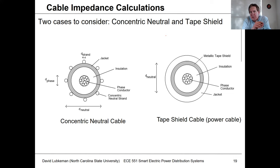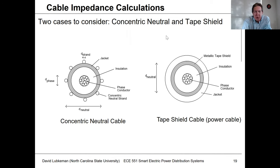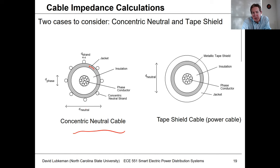We've got two different situations: concentric neutral and tape shield. Mostly for our homework we'll be focusing on concentric neutral. When you have a concentric neutral cable, you have the core for the phase current, then insulation, then a shield around the insulation, and then the concentric neutral conductors around that.